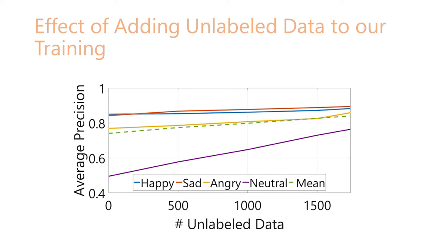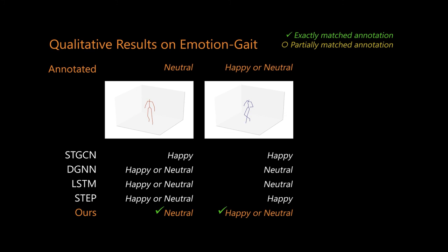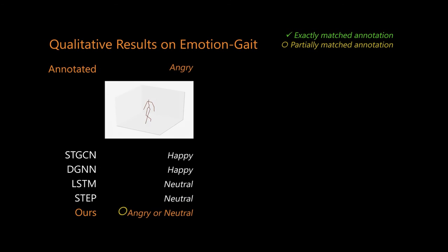We highlight the benefit of using unlabeled data more clearly in this plot. As we can observe, the average precision of all the classes increases linearly as we keep adding more unlabeled data into the training process. The trend does not indicate a saturation, implying that the performance can potentially improve further if we had yet more unlabeled data. We now show a few qualitative results. We can observe that our method matches the annotated emotions more consistently than the other methods. This is primarily because we force our encoder to learn representations from the kinematic chains in the human body and constrain the embedding space of our encoder to subsume the affective features computed from the gaits which contain rich information for perceiving emotions from gaits.